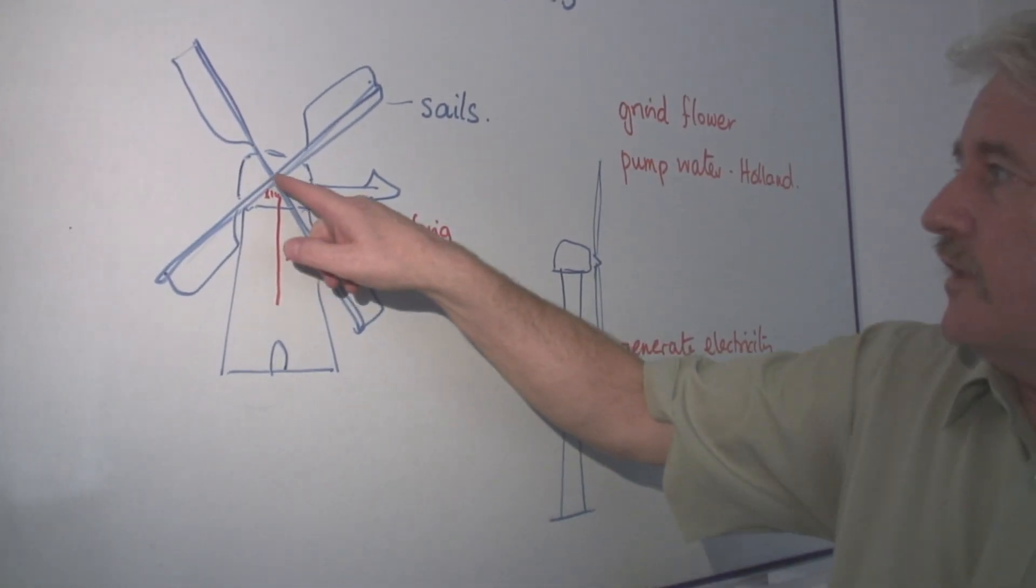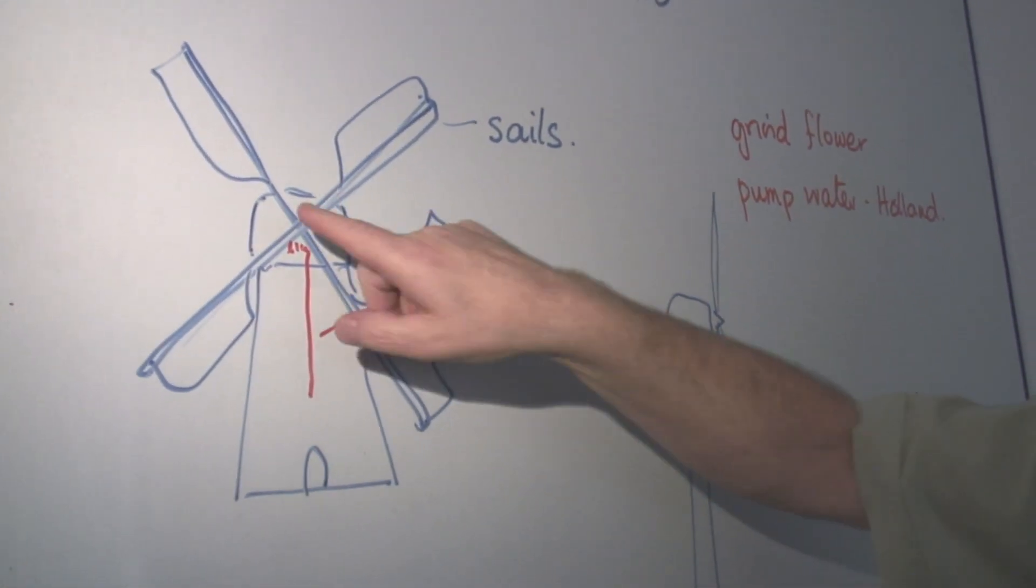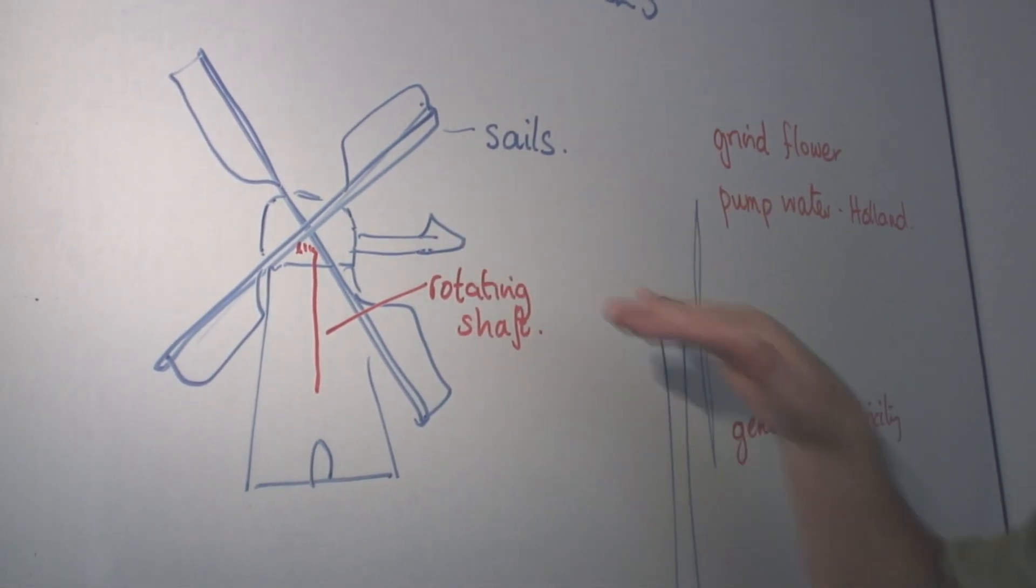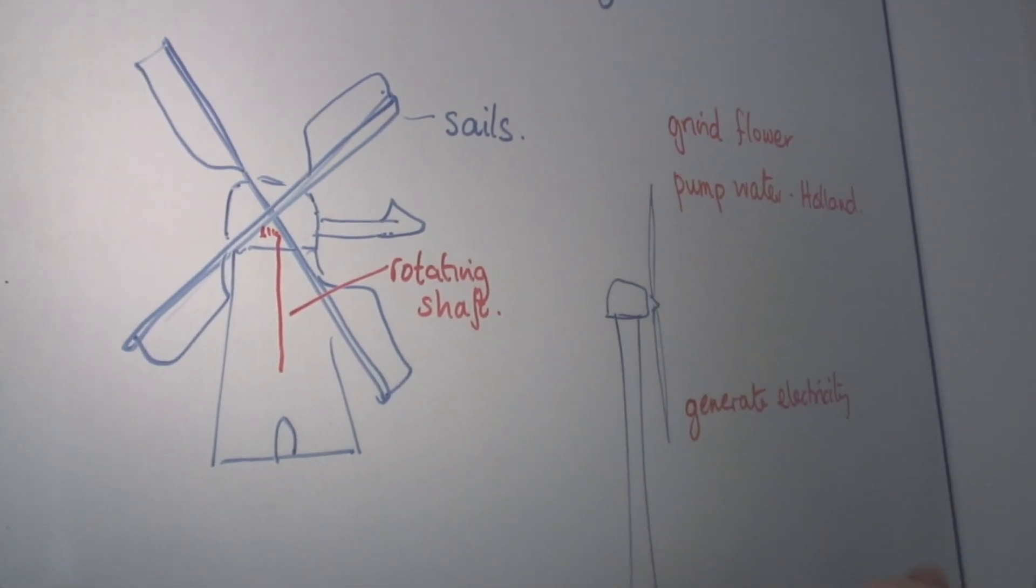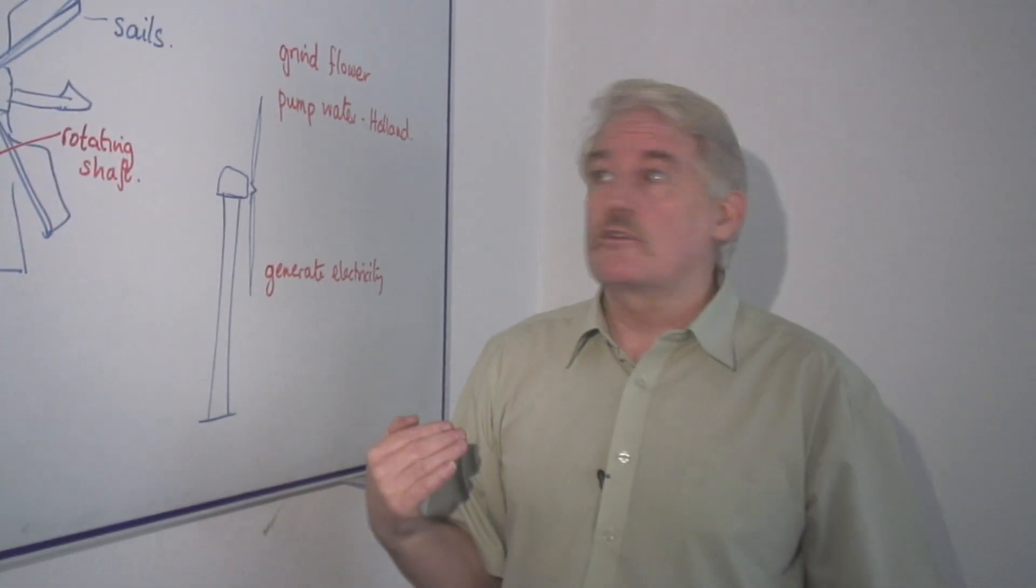Obviously the blades here are connected in the centre and there is a top part of the mill which can rotate. This enables it to be set in the right direction so that the wind is coming through the sails to cause them to rotate.